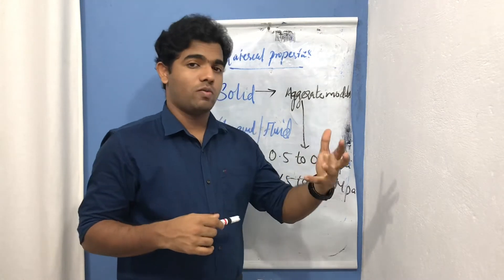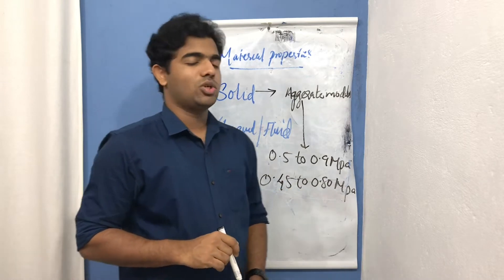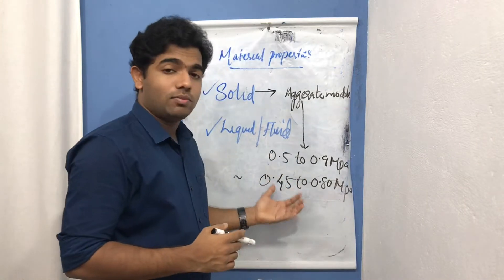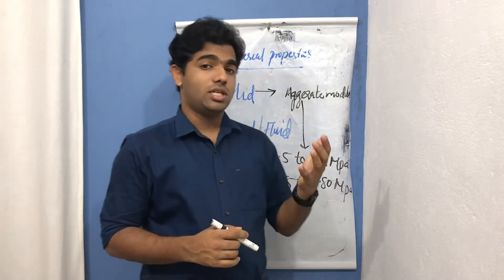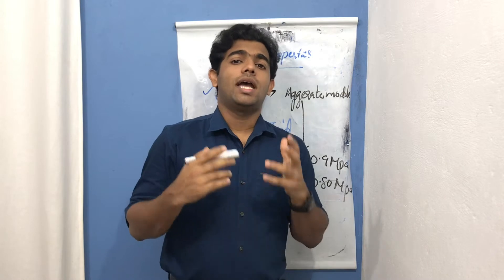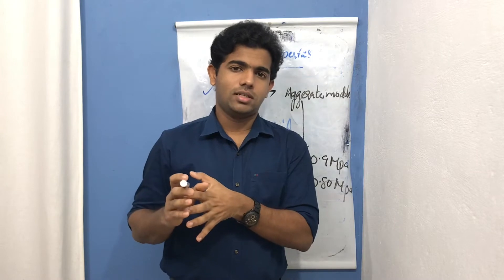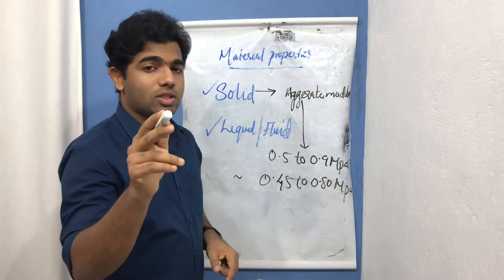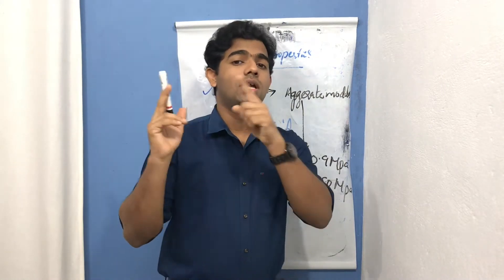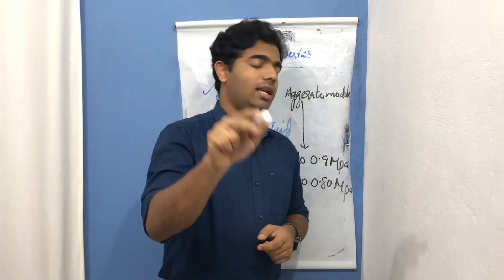If we equate it to Young's modulus for better understanding, the value comes around 0.45 to 0.80 megaPascals - almost the same values. For reference, Young's modulus of steel is 200 GPa, wood is about 10 GPa, and the aggregate modulus of bone is about 17 to 27 megaPascals, which we discussed in the biomechanics of bone.